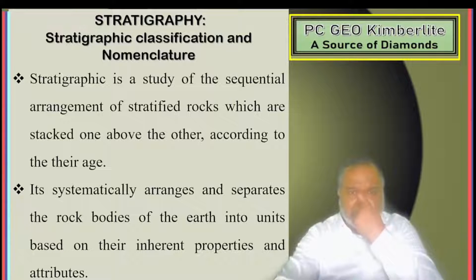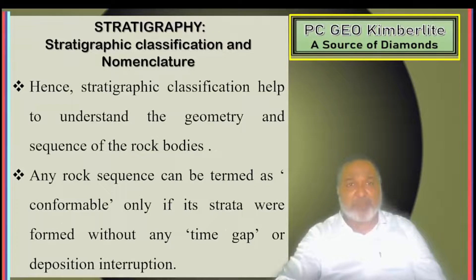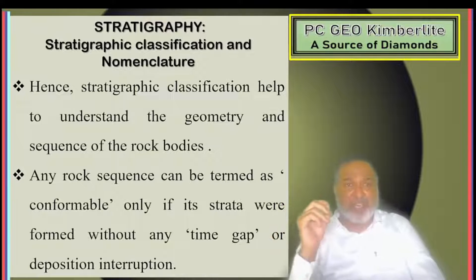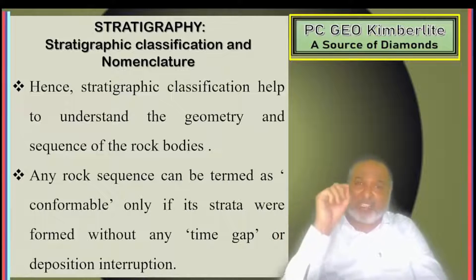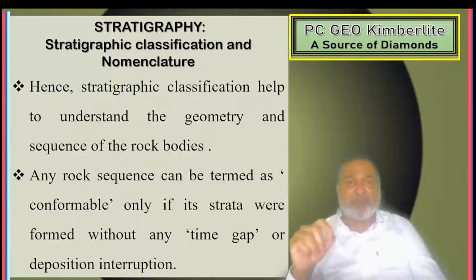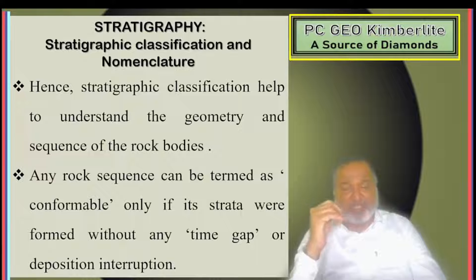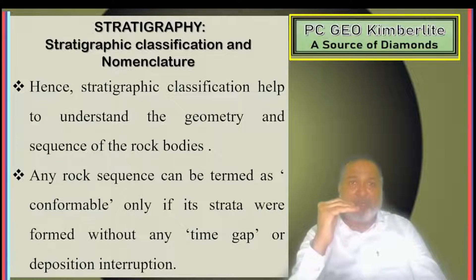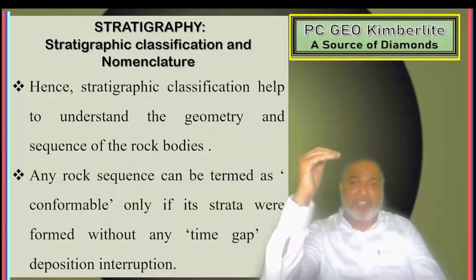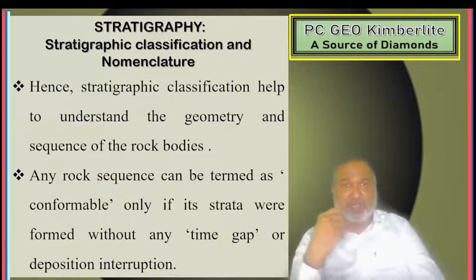It is systematically arranged and separates the rock bodies of the earth into units based on their inherent properties and attributes. Hence, the Stratigraphy Classification helps to understand the geometry and sequence of the rock bodies. Any rock sequence can be termed as conformable only if its strata were formed without any time gap or deposition interruptions. For example, a bed which started depositing A, then followed by B, C, D, E, F, G, H — alphabetically it is a continuous one, there is no gap in between, so it is called conformable.